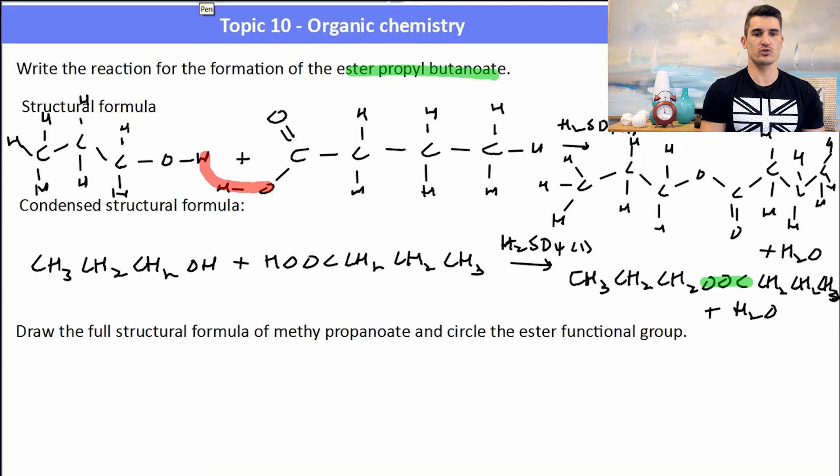Okay, the final one: draw the full structural formula of methylpropanoate and circle the ester functional group. Well, methanol—methyl only has one carbon—so we have our carbon with our oxygen connected to our acid, which in this case would have three carbons. So we have our carbon with our double bond and then two other carbons connected together, full structural formula. The ester functional group, if you're asked to circle it and name it, that is that group there and it is called an ester functional group.